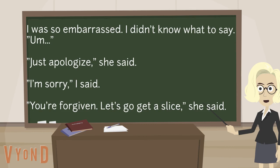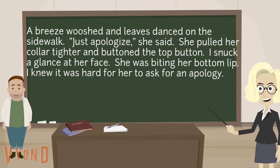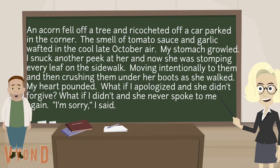Listen to Nick's next draft — the one he wrote after thinking about where the characters were and what they were doing: 'I was so embarrassed. I didn't know what to say. I kicked a pile of leaves that had gathered at the base of one of the trees on Brigham Street. My face felt like it was so hot it would melt. A breeze whooshed and leaves danced on the sidewalk. Just apologize, she said. She pulled her collar tighter and buttoned the top button. I snuck a glance at her face. She was biting her bottom lip. I knew it was hard for her to ask for an apology. An acorn fell off a tree and ricocheted off a car parked on the corner. The smell of tomato sauce and garlic wafted in the cool late October air. My stomach growled. I snuck another peek at her, and now she was seeking out every leaf on the sidewalk, moving intentionally to them and then crushing them under her boots as she walked.'